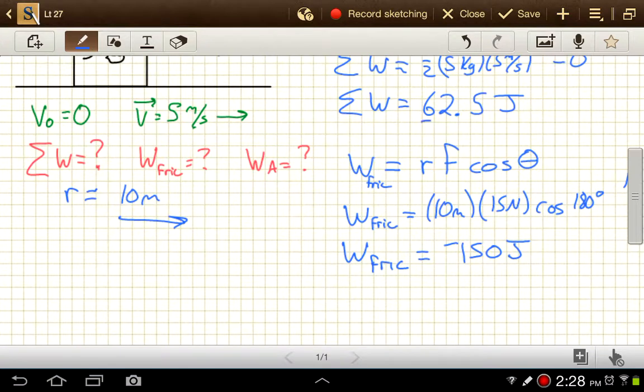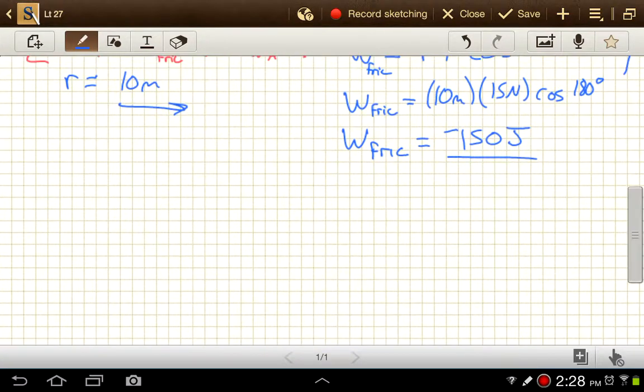And then, last up, we know that our net work has to be equal to the work done by A, plus the work done by friction.